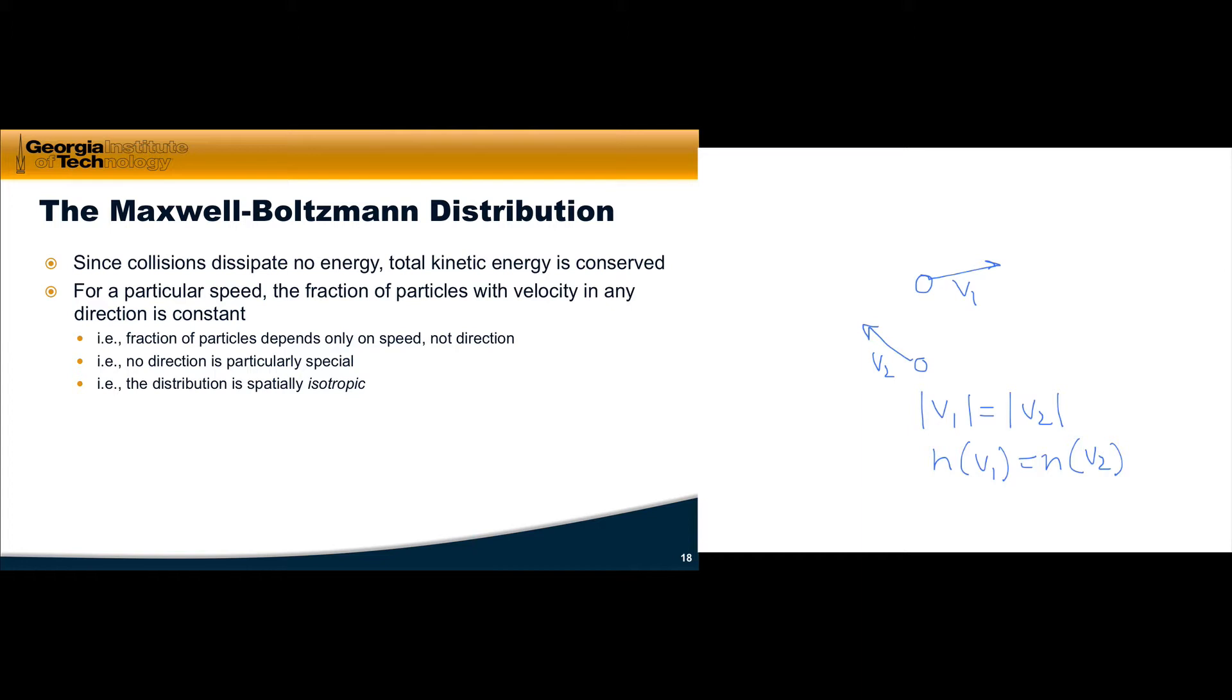What that means is that the distribution of speeds must be spatially isotropic. It must look the same no matter how we look at the distribution, no matter what angle or what direction we look at. Furthermore, if we're going to say that no direction is particularly special, that means that the distributions of the velocity components in x, y, and z should also be isotropic. So if we broke down each of these velocity vectors into a y component and an x component, then those two should also be distributed isotropically.